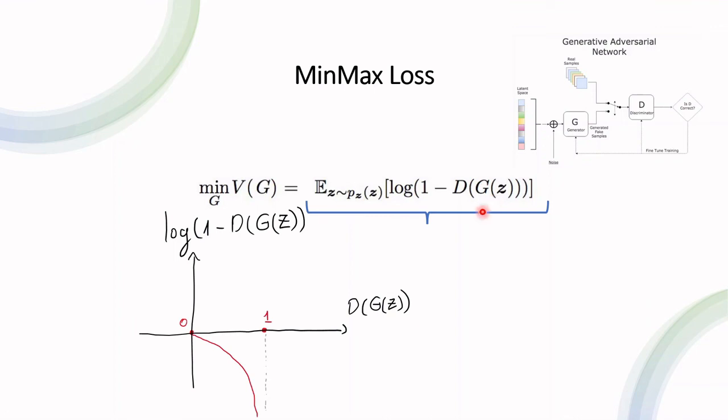And again, if we plot that function again, we would see that as it gets closer to one, the smaller the value is. And that is why we want to minimize this term regarding the generator.